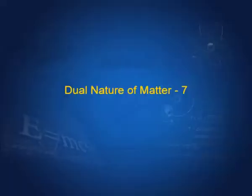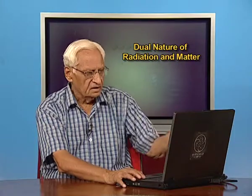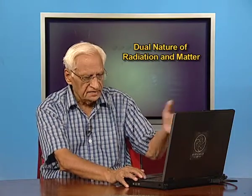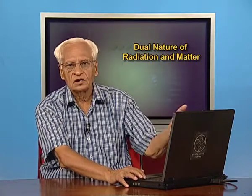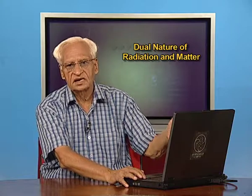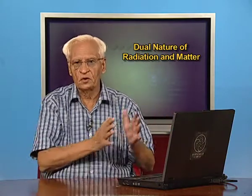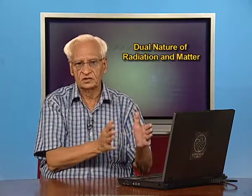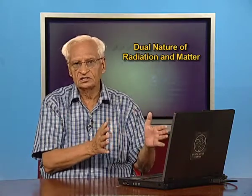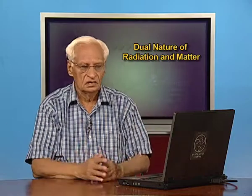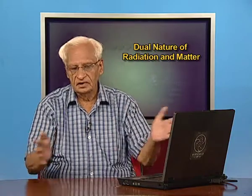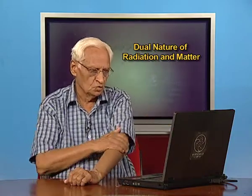This is going to be the last lecture in the series on the dual nature of matter. We shall take a few examples and then discuss the electron microscope, which uses the de Broglie principle. Because electrons have wavelength, we can have an electron microscope.